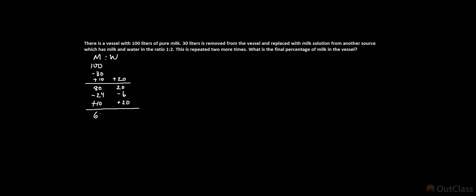Next step: 30% of 66—minus 19.8 milk, minus 10.2 water—is your removal step. Your replacement step is again +10 milk, +20 water. You will have 56.2 milk and the remaining will be 43.8 water. We have done this three times now.